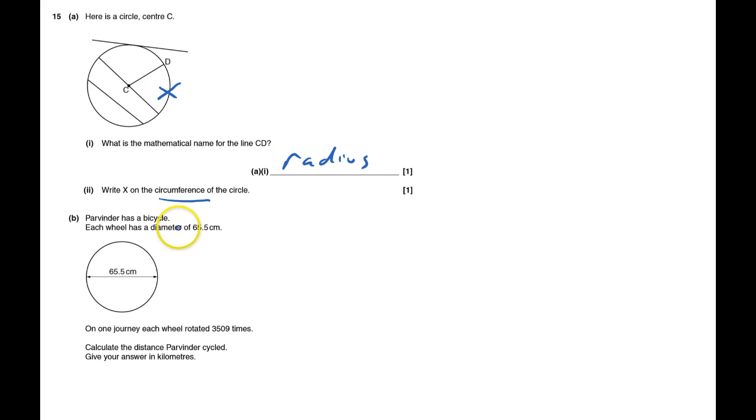Parvinta has a bicycle. Each wheel has a diameter of 65.5. On one journey, each wheel rotates 3,509 times.